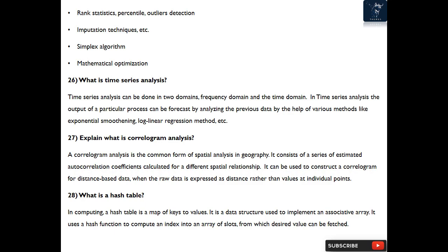Question 28: What is a hash table? In computing, a hash table is a map of keys to values. It is a data structure used to implement an associative array. It uses a hash function to compute an index into an array of slots from which the desired value can be fetched.